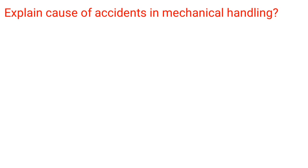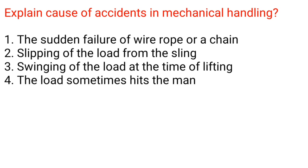Causes of accidents in mechanical handling: 1. Sudden failure of wire rope or a chain. 2. Slipping of the load from the sling. 3. Swinging of the load at the time of lifting. 4. The load sometimes hits the man.